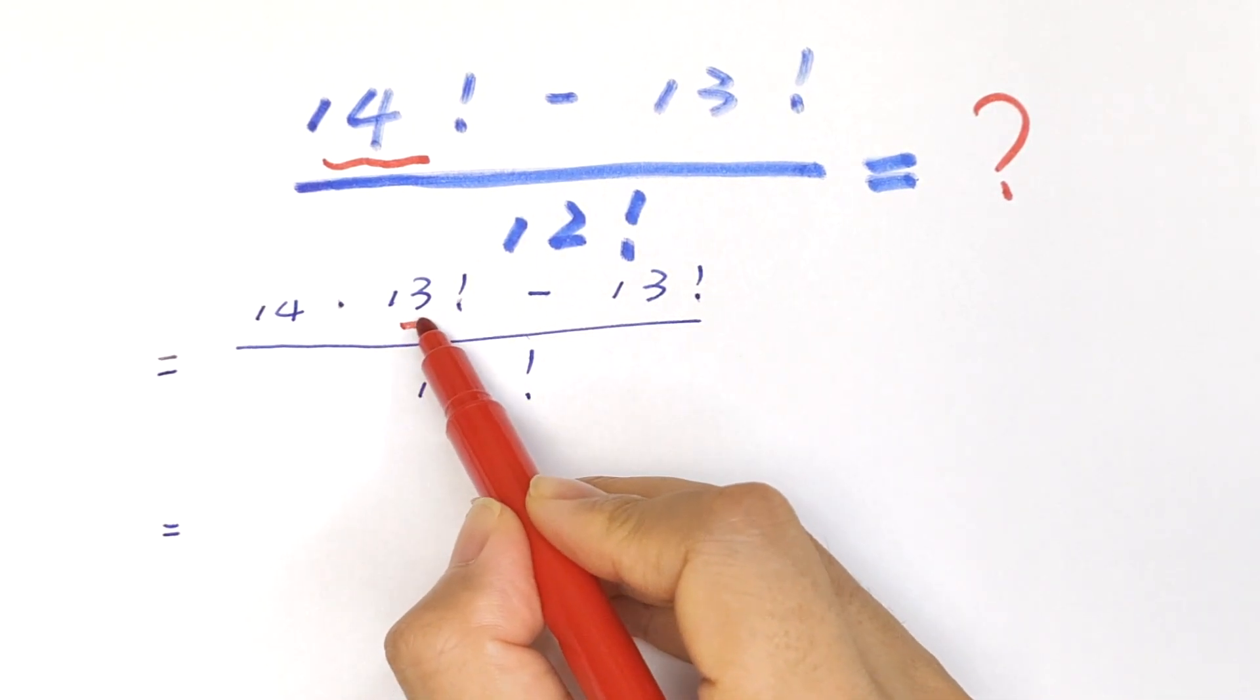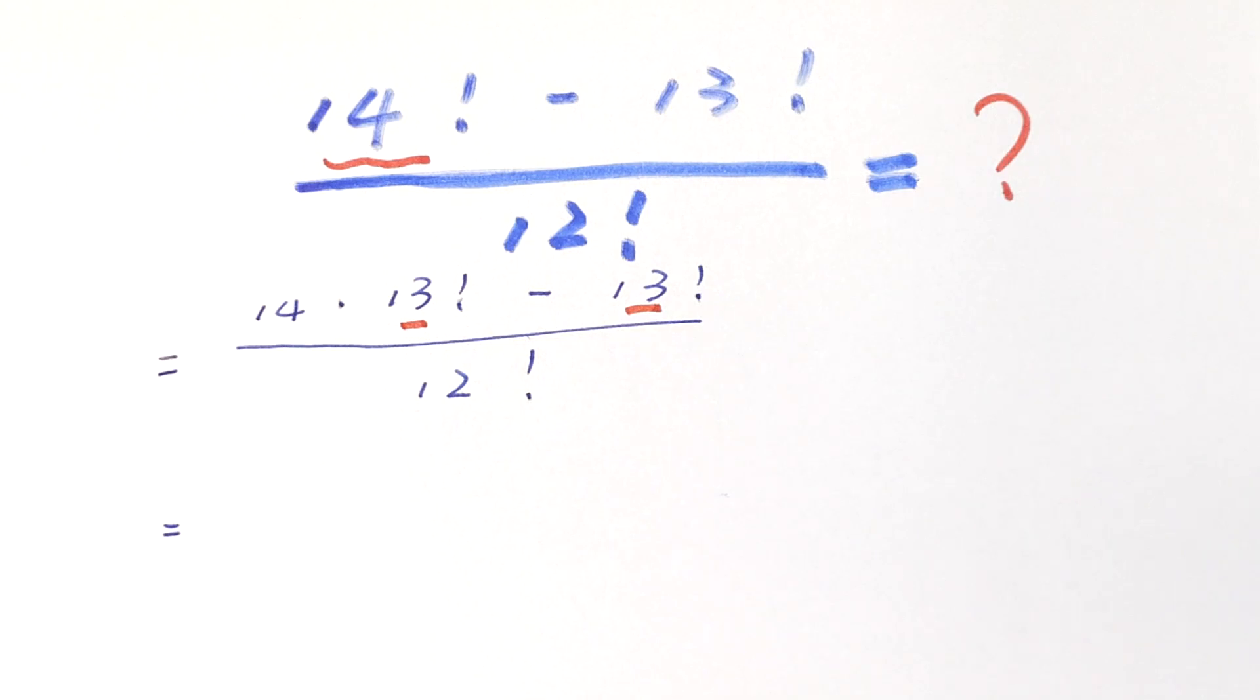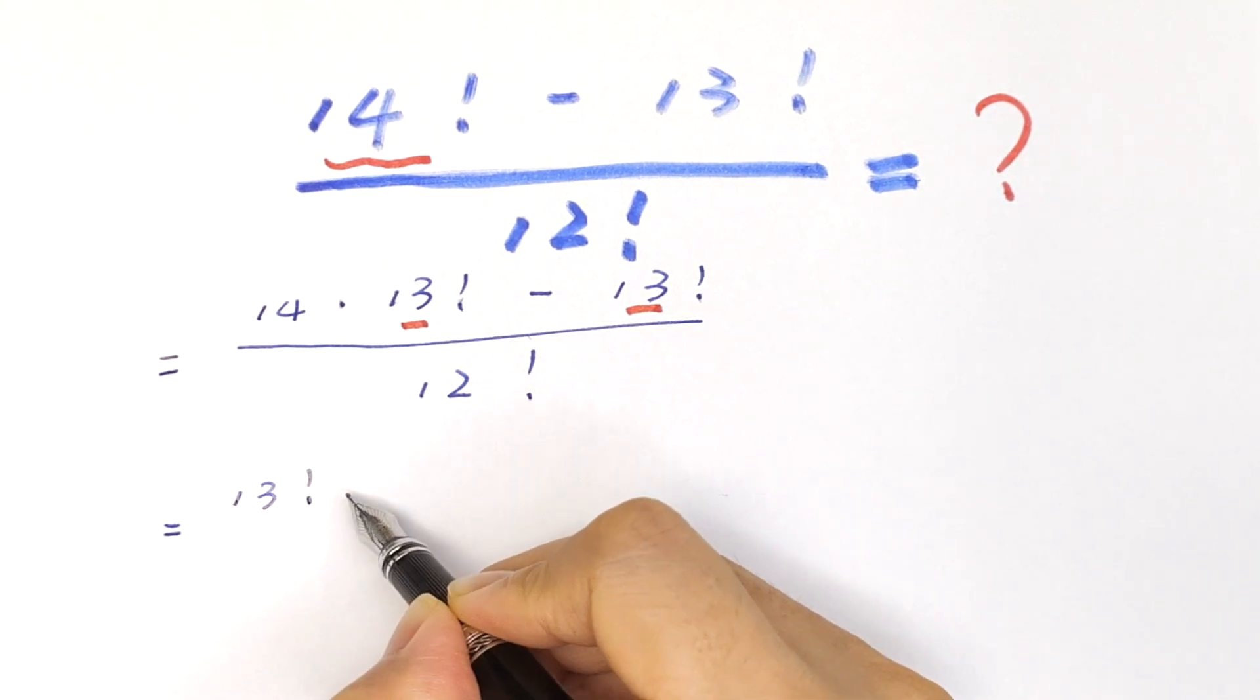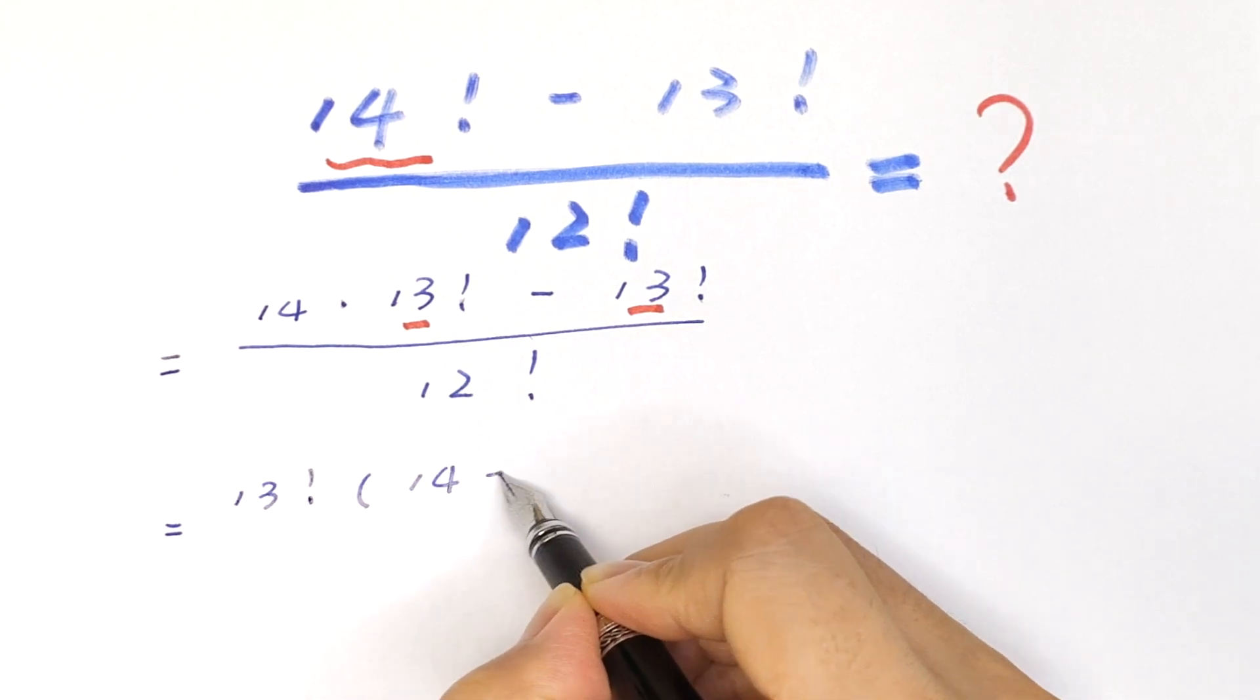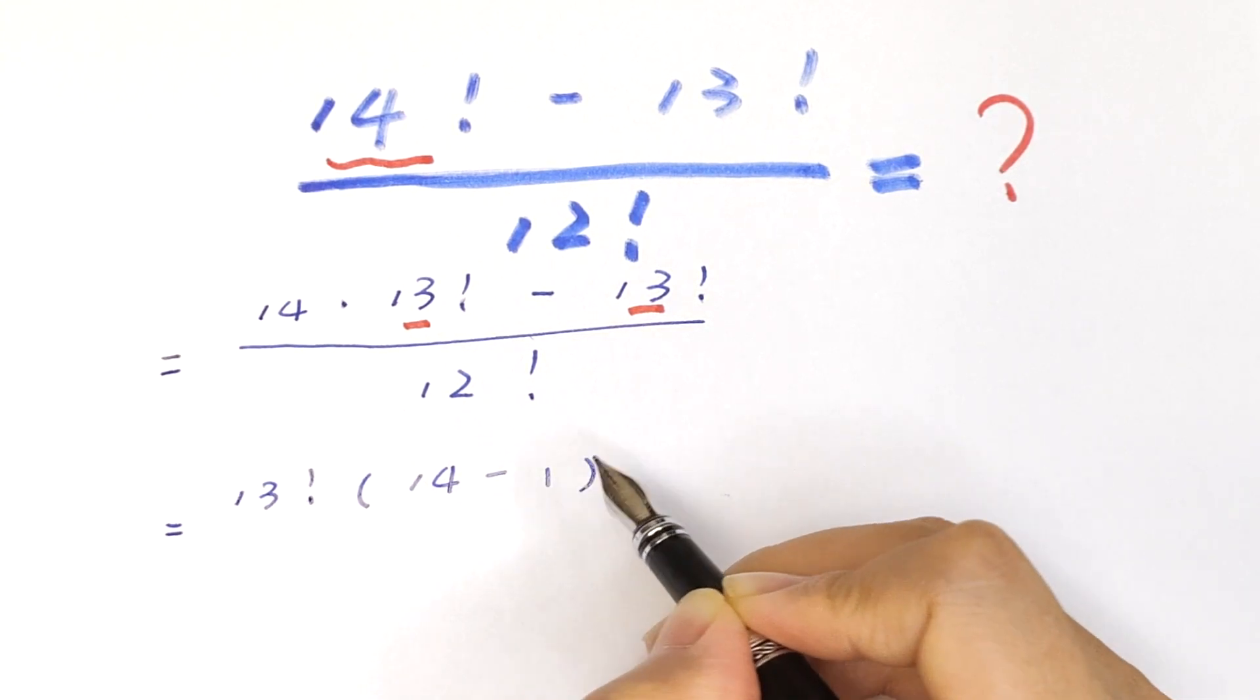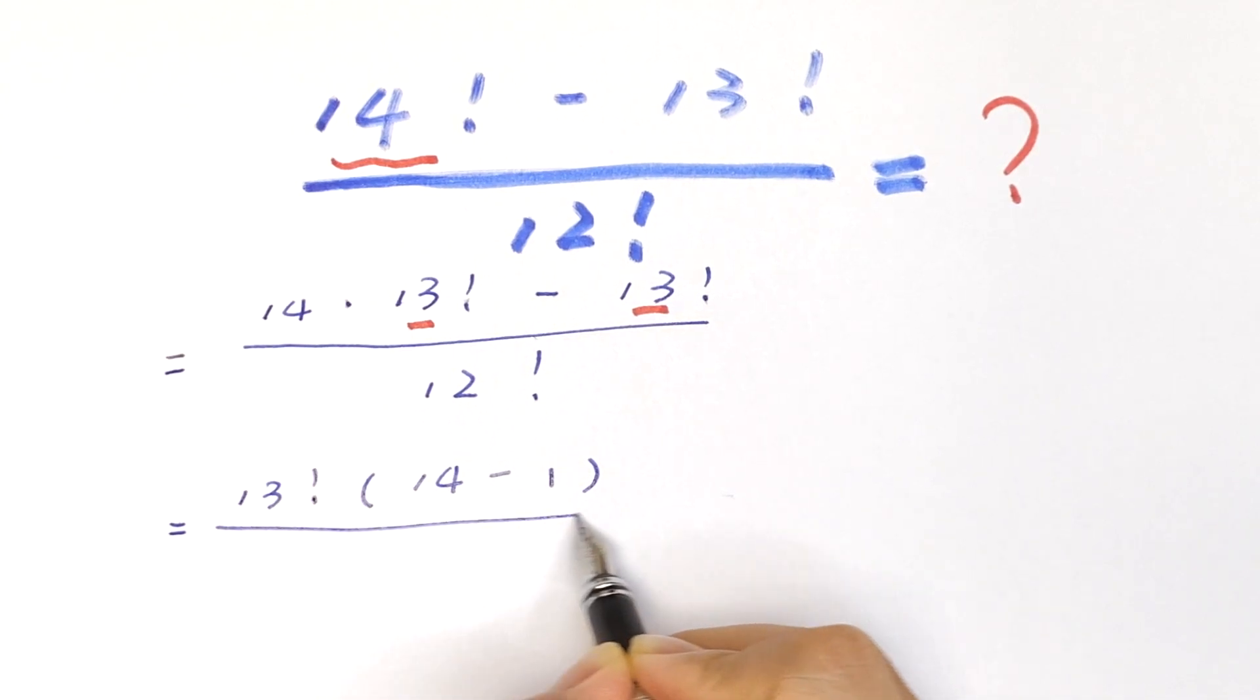13 factorial is common, so we take this out of the bracket: 13 factorial times (14 minus 1), divided by 12 factorial.